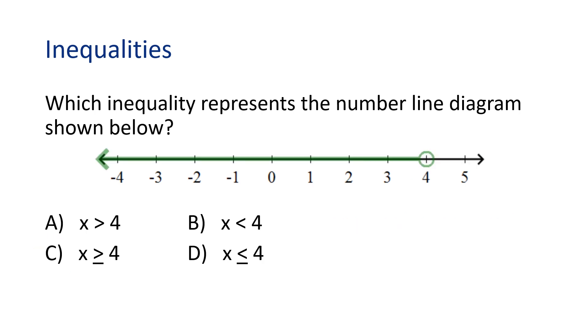Which inequality represents the number line diagram shown below? In this problem, the line is shaded to the left of four, where the numbers are less than four. And do you notice the circle is open? This means the inequality will not have an equal sign with it. The graph represents all the values less than four. So the correct answer is B. X is less than four.